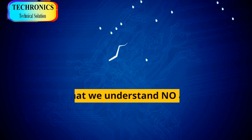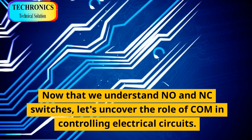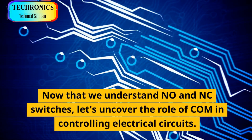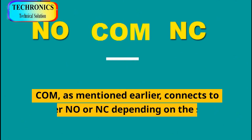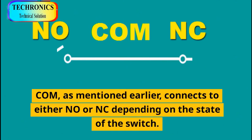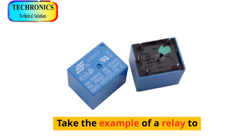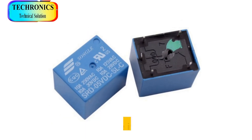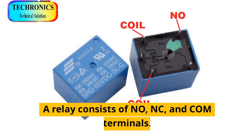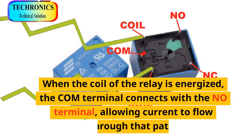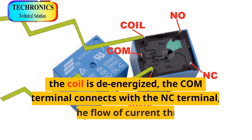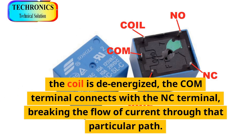Now that we understand NO and NC switches, let's uncover the role of COM in controlling electrical circuits. COM, as mentioned earlier, connects to either NO or NC depending on the state of the switch. Take the example of a relay to better illustrate its functionality. A relay consists of NO, NC, and COM terminals. When the coil of the relay is energized, the COM terminal connects with the NO terminal, allowing current to flow through that path. Conversely, when the coil is de-energized, the COM terminal connects with the NC terminal, breaking the flow of current through that particular path.